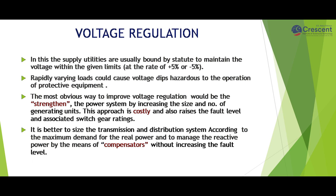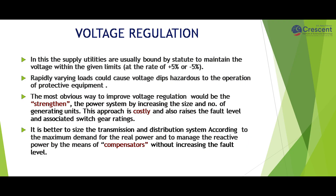Another objective of load compensation is voltage regulation. Supply utilities are usually bound by statute to maintain voltage within given limits, typically plus or minus five percent. Rapidly varying loads could cause voltage dips hazardous to the operation of protective equipment. For example, an electric arc furnace used to melt metal causes large voltage variations, and carbon arc bulbs cause discomfort to the eyes, so constant voltage must be maintained.